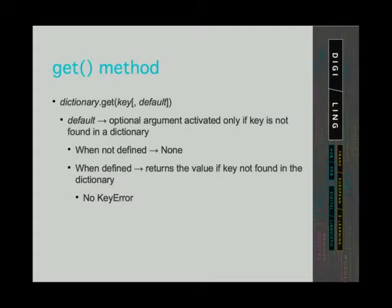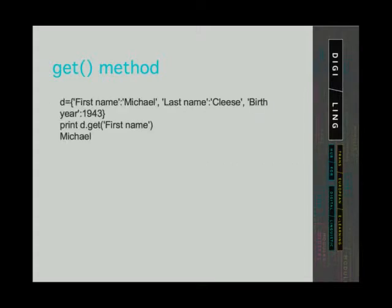We don't get an error. In this example, we still have the dictionary with the wrong last name. We call the method get on dictionaryD and want the value for the key first name. The program returns a value because the key can be found in the dictionary.